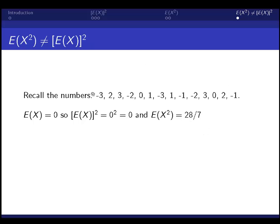But the expected value of x squared is 28 over 7. Basically, what happened was when we squared these numbers, they no longer cancel out their positive equivalents. So there's the rule. Hopefully now it makes a bit more sense.